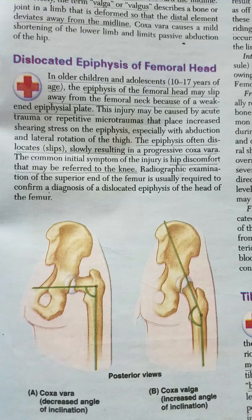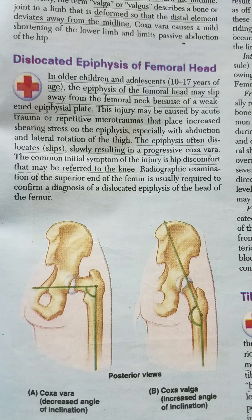Coxa vera could be congenital, meaning present at birth. It could be developmental, and that usually goes unnoticed. It could also be acquired — for example, in rickets.